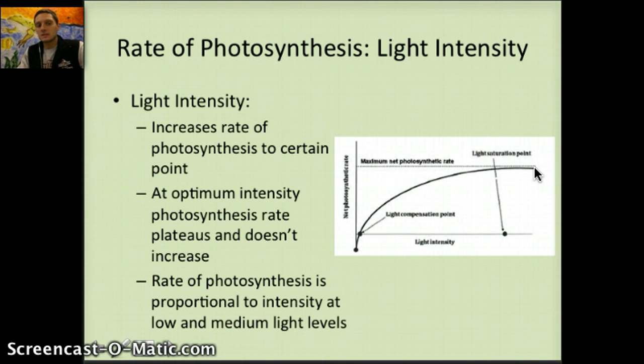The rate of photosynthesis is proportional to the intensity of the light at low and medium light levels. So at lower or medium light levels, the actual rate of photosynthesis is going to be proportional. So for however much the light intensity increases, so will the rate of photosynthesis up again to this specific point.